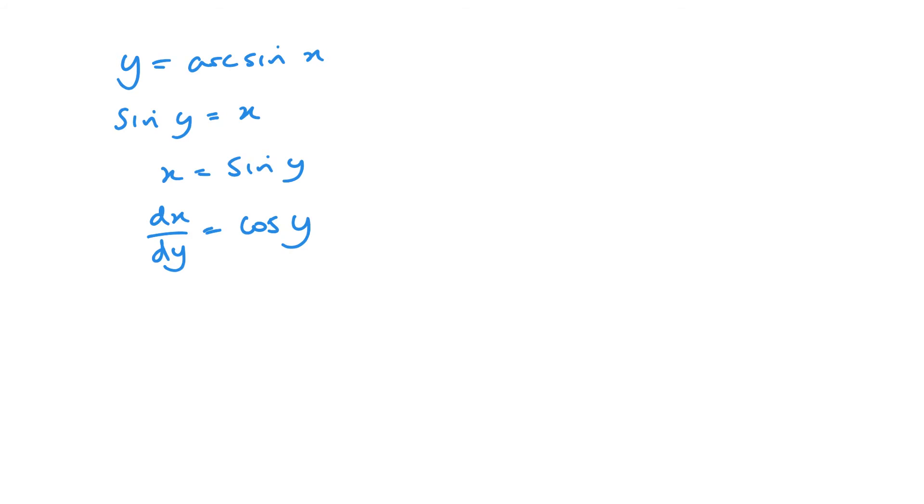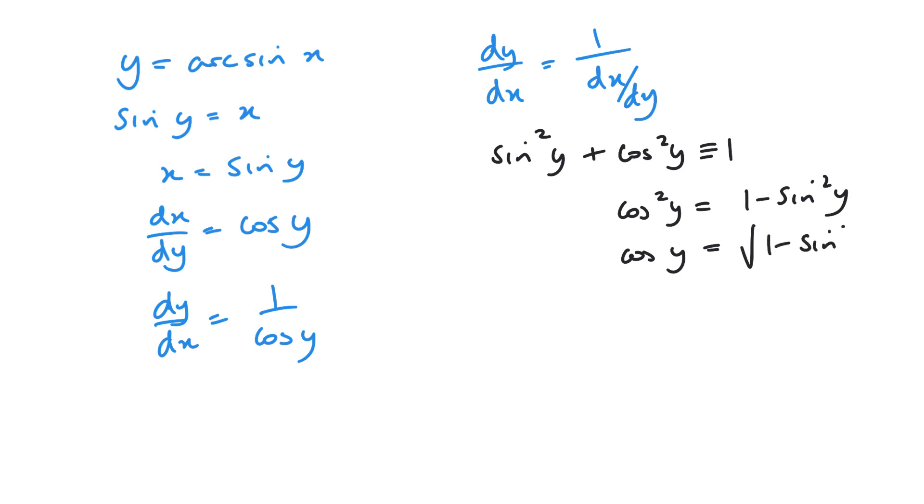Now to get it as dy by dx, all I need to do is flip it. Essentially dy by dx is 1 over cos y. It's worth remembering or noting that dy by dx is the same as 1 divided by dx by dy. Now from this point onwards we also need to bring in another familiar identity and that's sine squared plus cos squared equals 1. So if I rearrange this so I get cos squared y is going to be 1 minus sine squared y and cos y is the square root of 1 minus sine squared y.